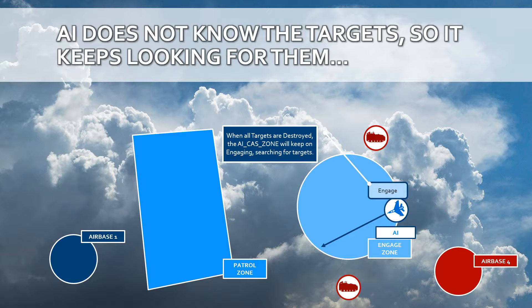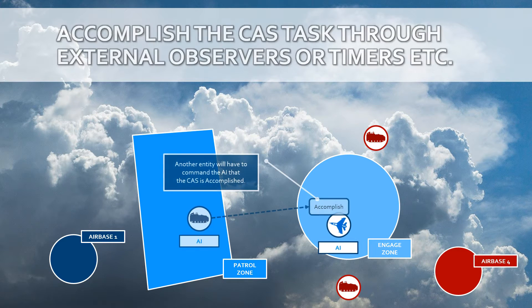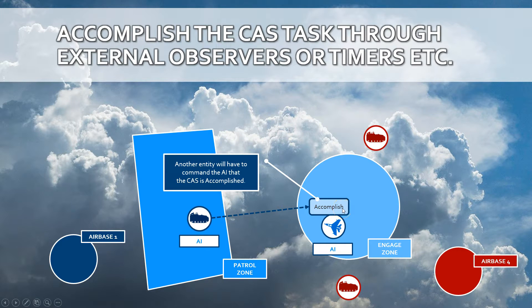Once all the targets are destroyed, the AI will keep flying within the engagement zone searching for targets. You need to tell the AI that the close air support has been done by applying the 'accomplish' event. Typically, another AI or entity — an observer within that zone — is responsible for raising that event.